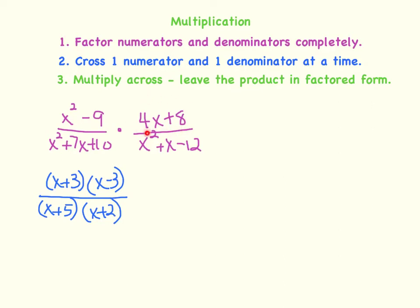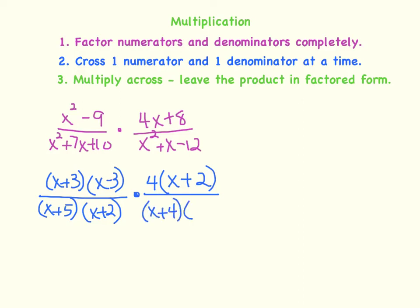Now let's factor our next numerator. Here I have a binomial, so I'm finding the GCF of the two terms and dividing each term by that GCF. Out of 4x plus 8, my GCF is 4. So 4x divided by 4 is x, and 8 divided by 4 is 2, giving me 4 times the quantity x plus 2. Now we have a trinomial in the denominator. I need to find factors of negative 12 that add up to 1, and those factors would be positive 4 and negative 3. So I'm going to say x plus 4 times x minus 3.